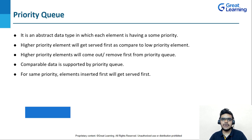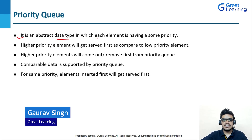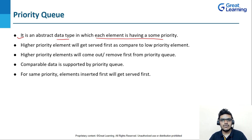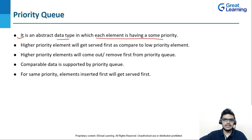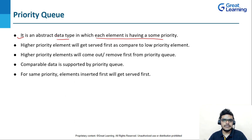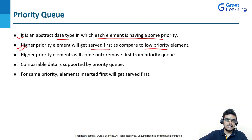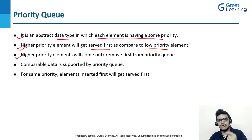A priority queue is an abstract data type in which each element has some priority. An abstract data type is a data type whose behaviors are defined by a set of operations. In a priority queue, higher priority elements will get served first compared to low priority elements, and higher priority elements will also be removed from the priority queue first.